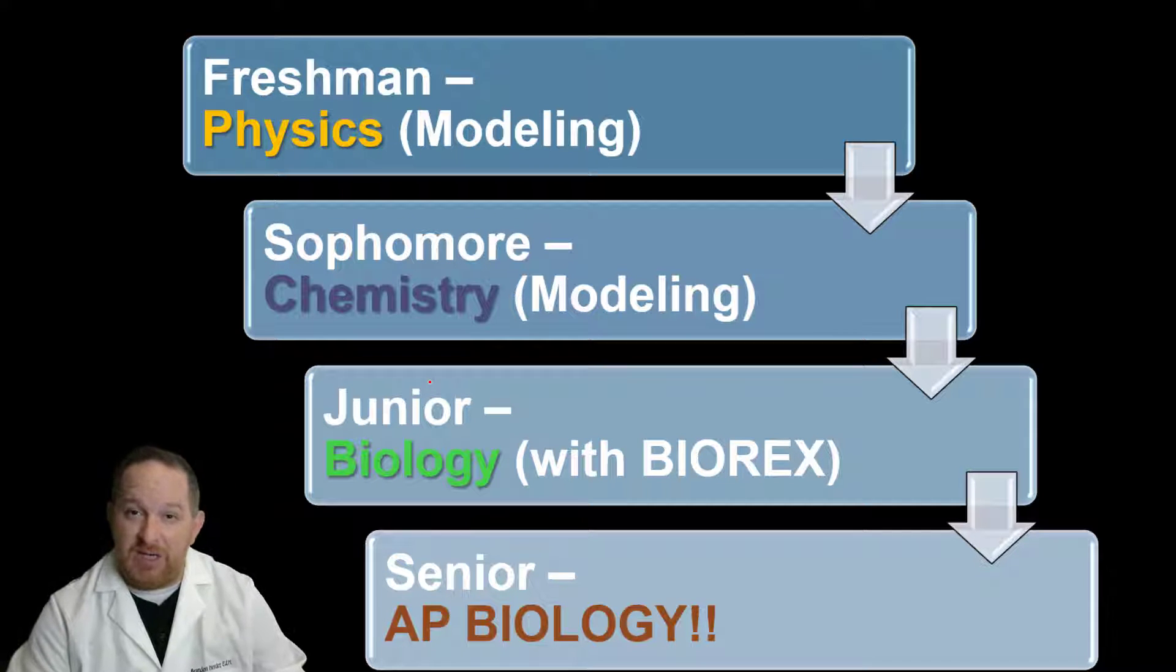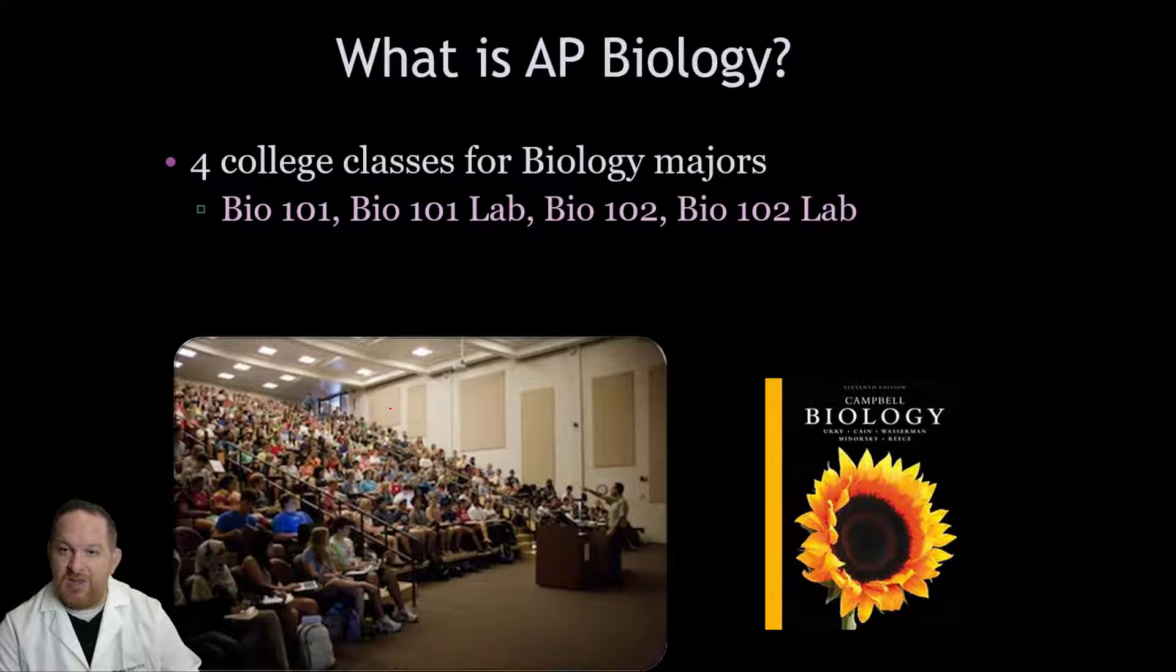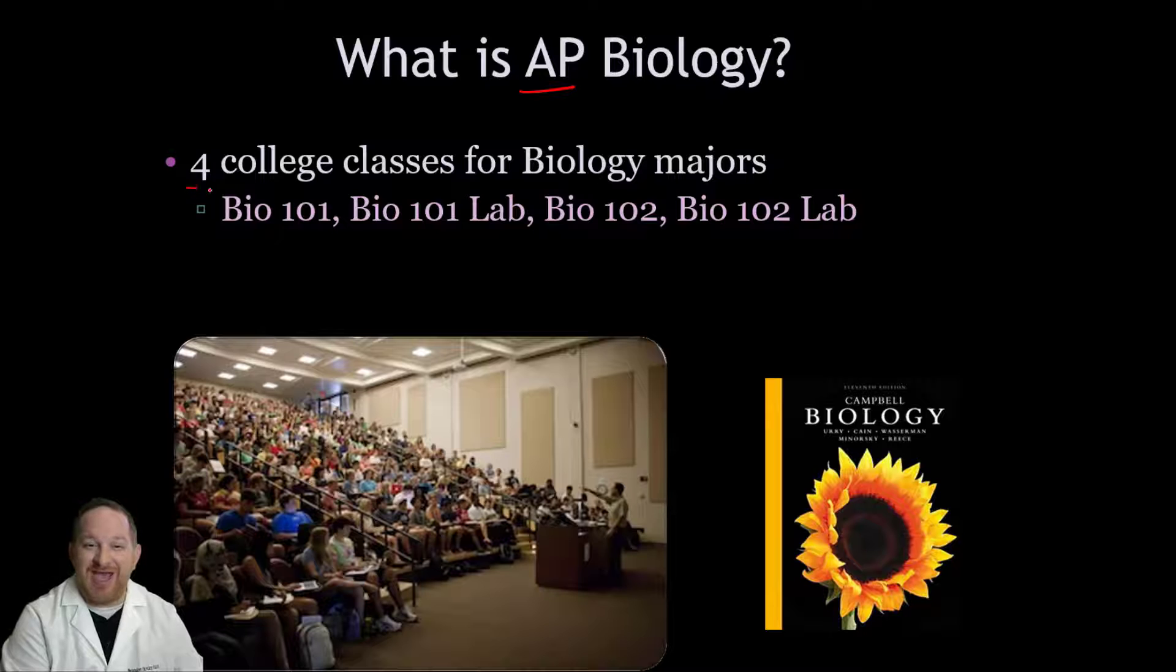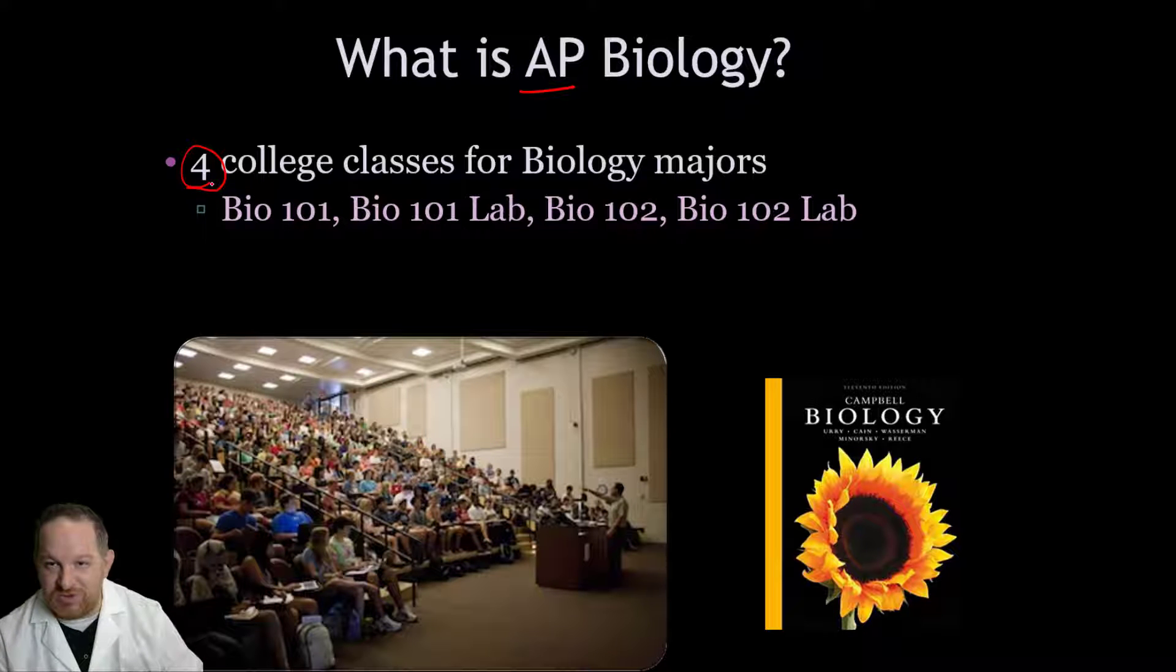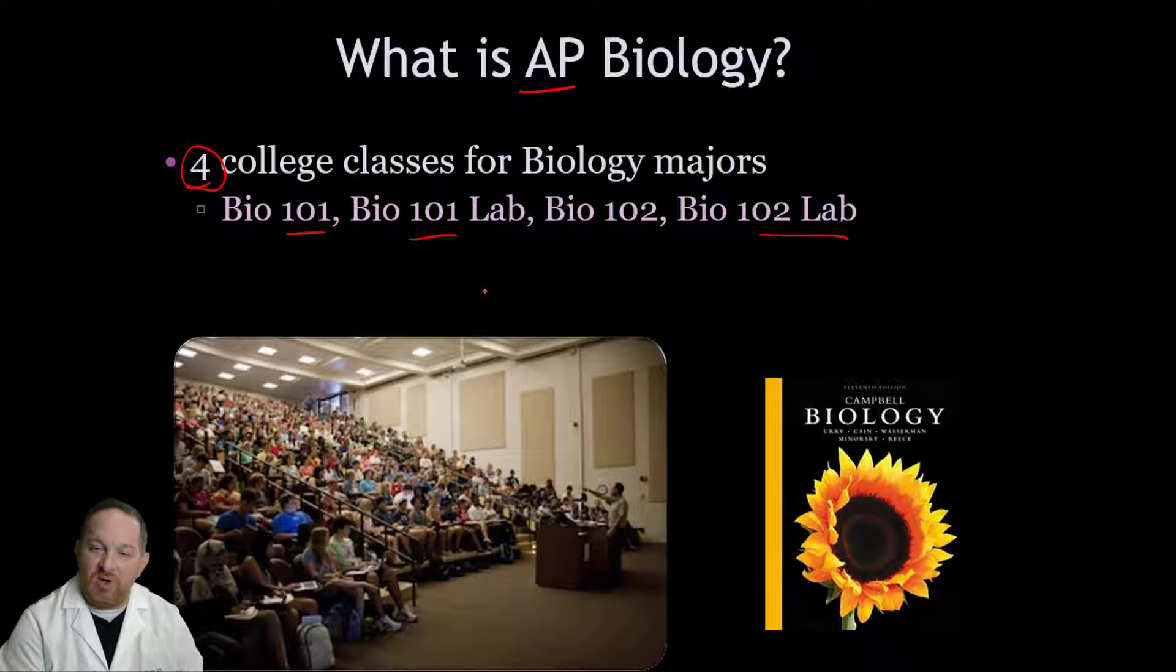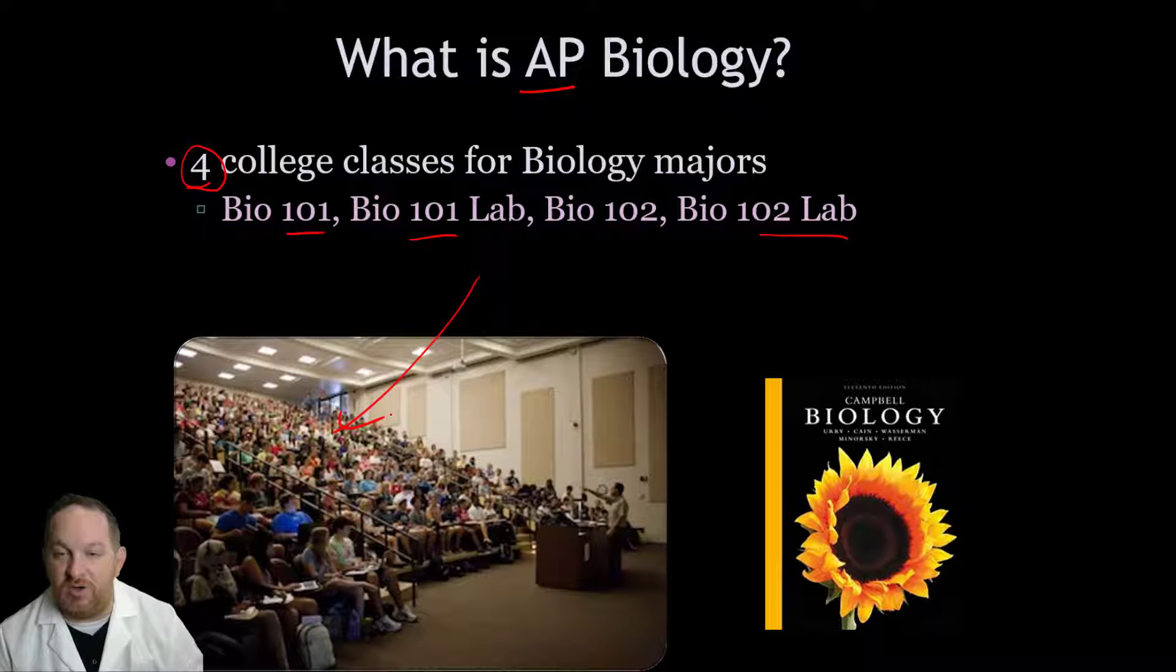So what is AP Biology? Well, if you think about it, AP Biology is a college level course. It's actually four college level courses. AP Biology is the equivalent of these four courses: Bio 101, 102, 101 lab and 102 lab. If you think about what an experience might look like at the university, you'd probably be sitting in a lecture hall with three or four hundred other people getting the lecture and maybe going to the lab.